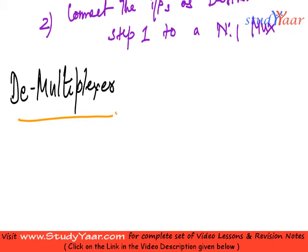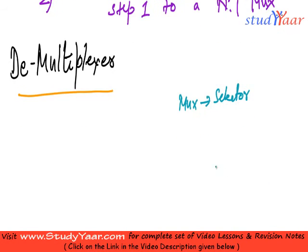Your multiplexer is a selector. Mux is a selector. It selects one from amongst the N inputs and give it as an output.